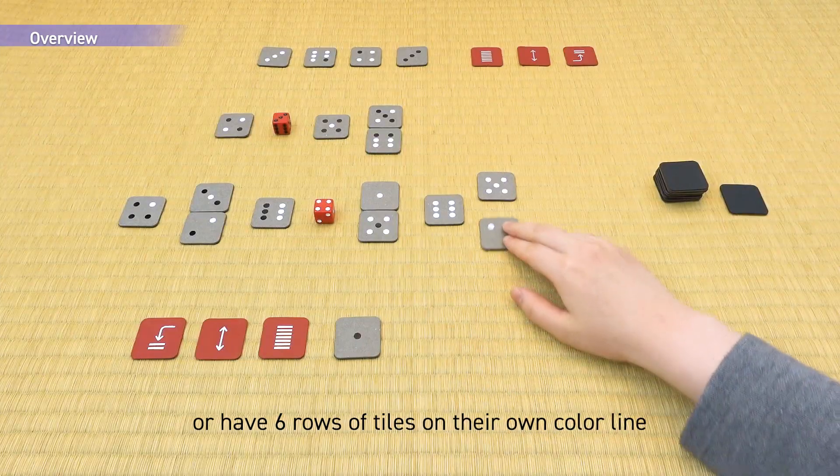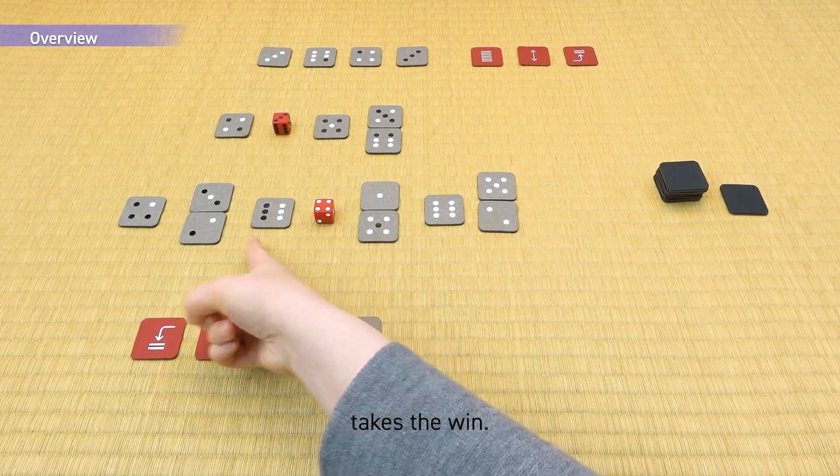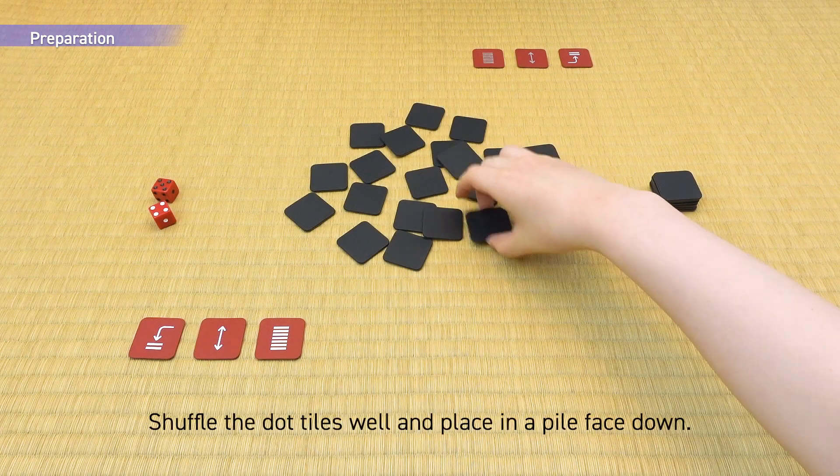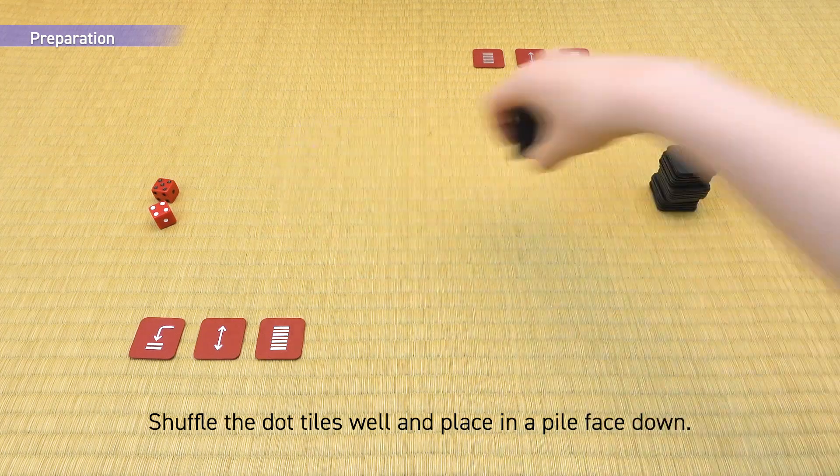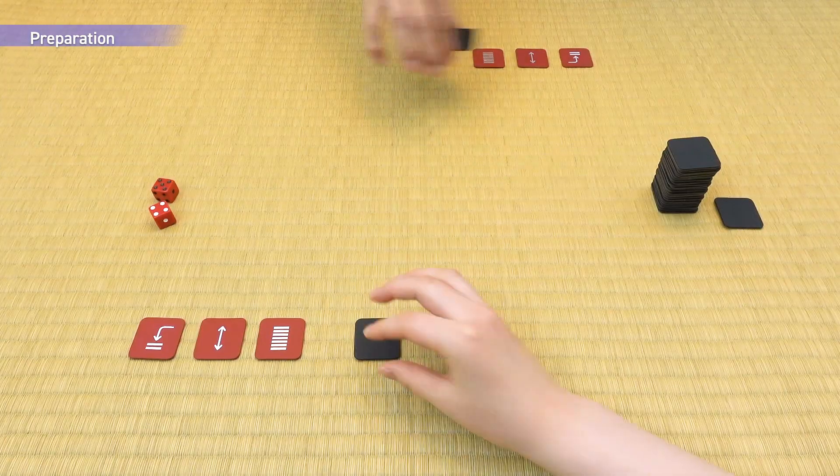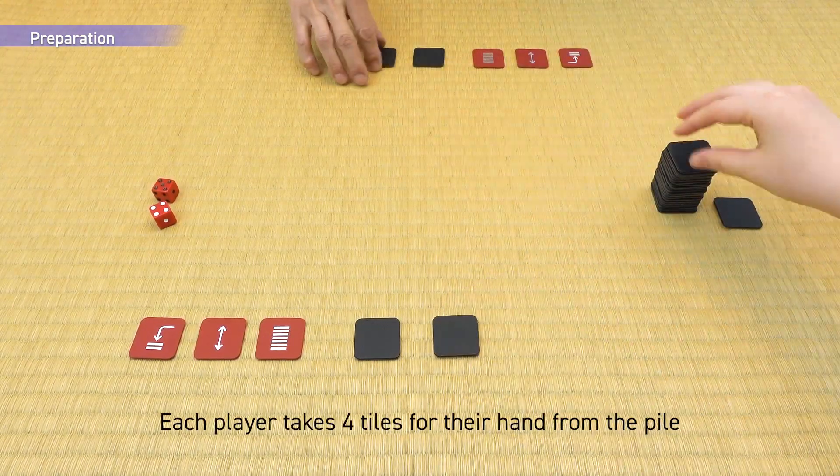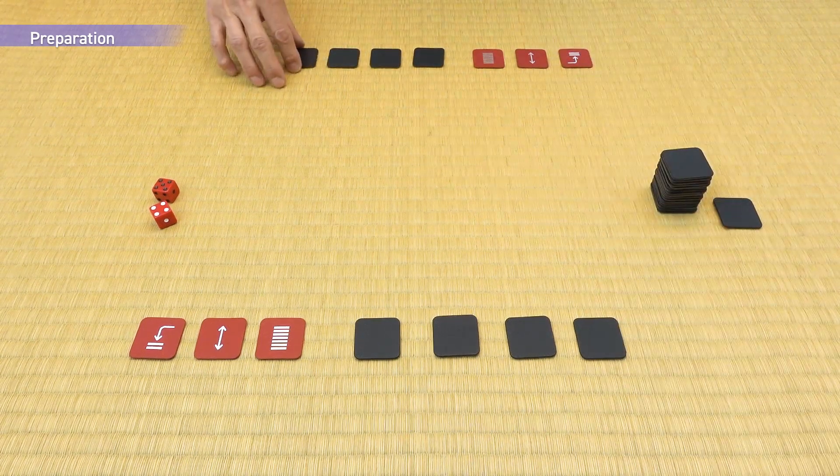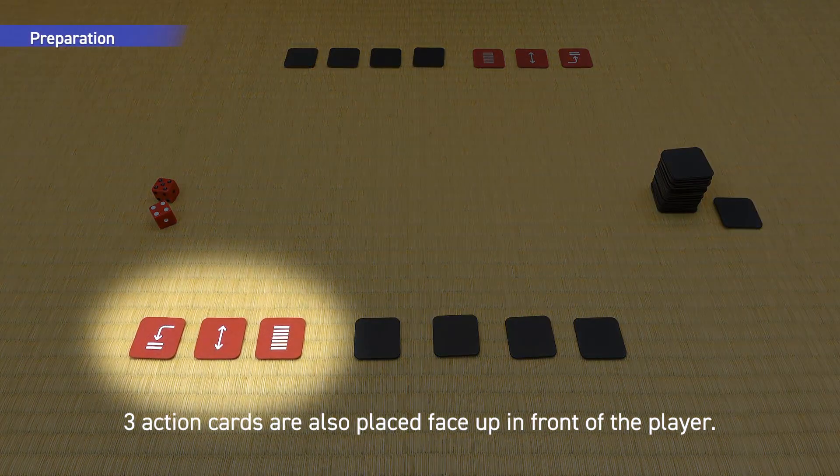Preparation: Shuffle the dot tiles well and place in a pile face down. Remove one tile and leave it face down. Each player takes four tiles for their hand from the pile and places them face down in a row. Three action cards are also placed face up in front of the player.